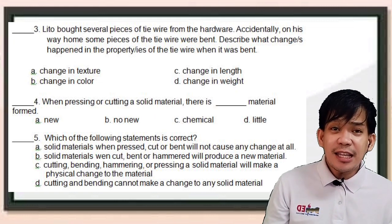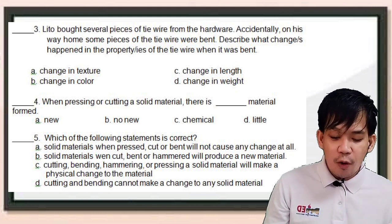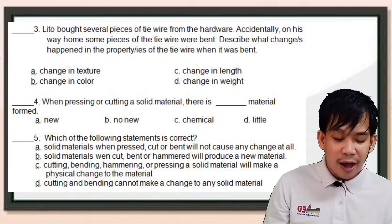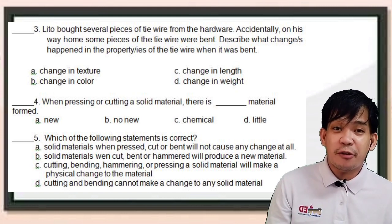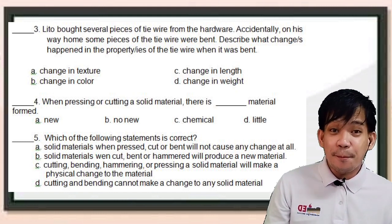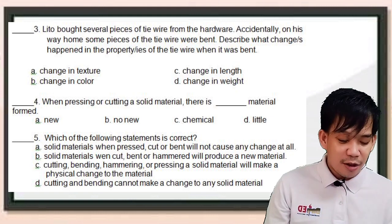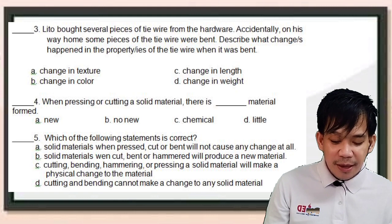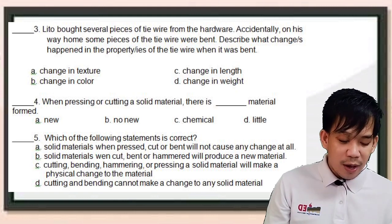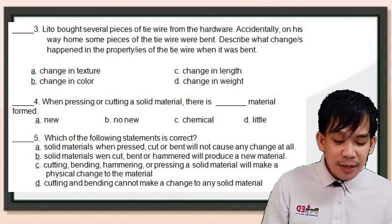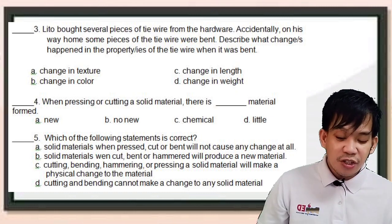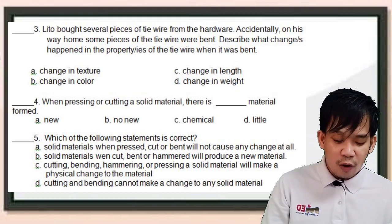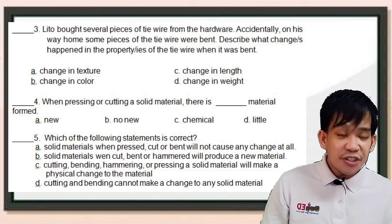Number three, Lito bought several pieces of tie wire from the hardware. Accidentally on his way home, some pieces of the tie wire were bent. Tie wire is yung alambre — ginagamit sa construction ng mga construction workers, or sometimes si mama ginagawa yung sampayan. Describe what changes happened in the properties of the tie wire when it was bent. A, change in texture; B, change in color; C, change in length; or D, change in weight.